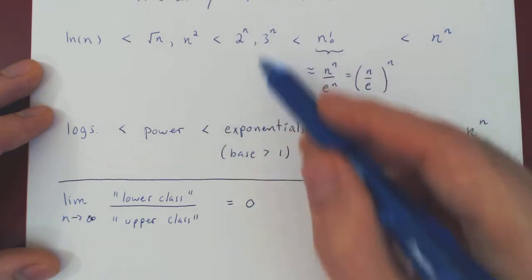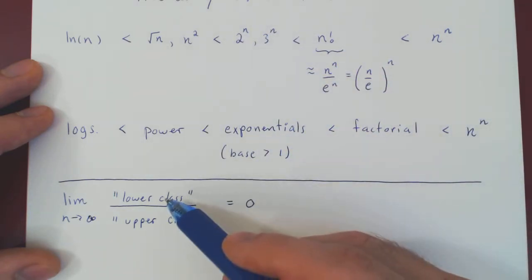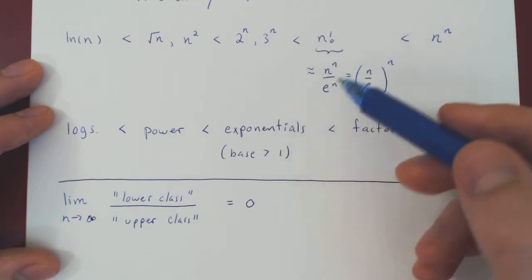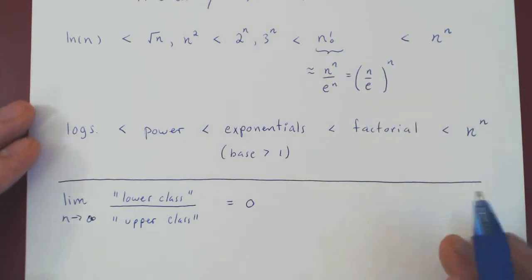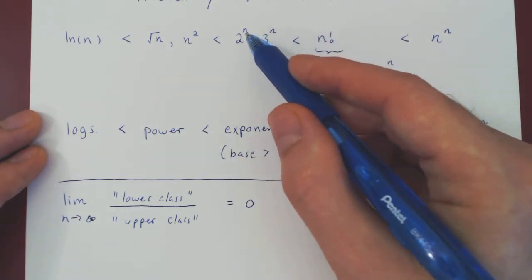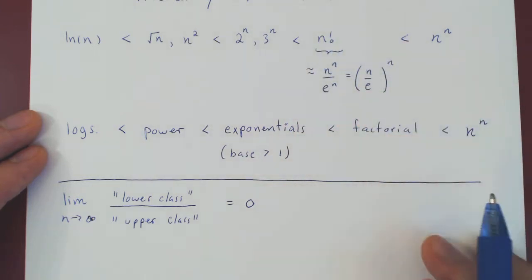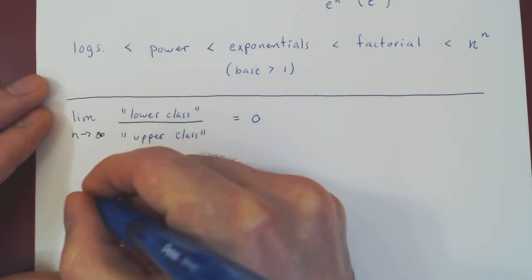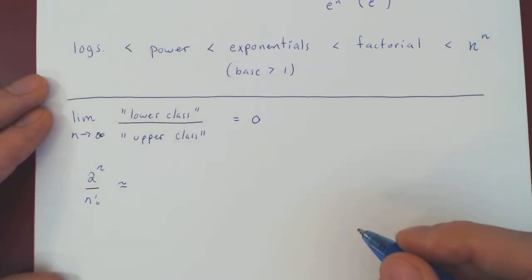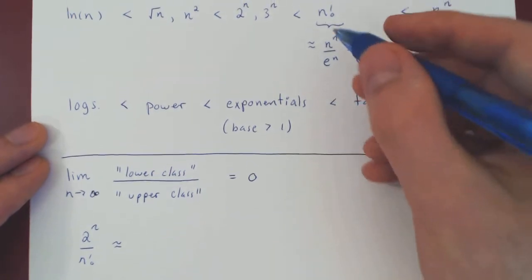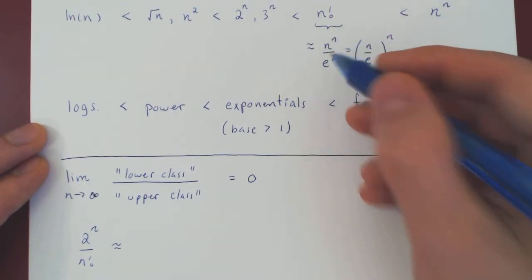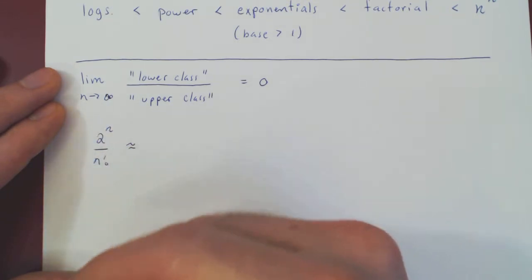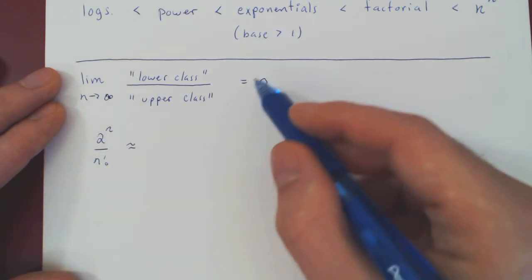If you take an exponential as the lower class function over a factorial as the upper class function, then again it will have a limit of zero. We will do it heuristically. Let's take 2 to the n over n factorial. We will use the heuristic that n factorial is approximately n to the n over e to the n. With this heuristic, we'll have a very good explanation as to why the limit of the ratio is zero.